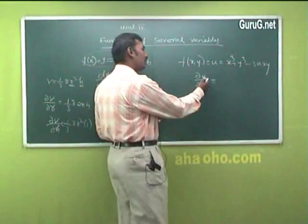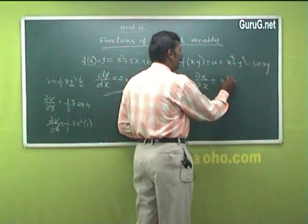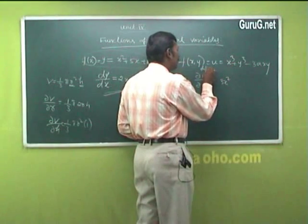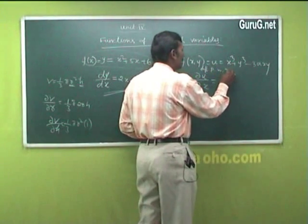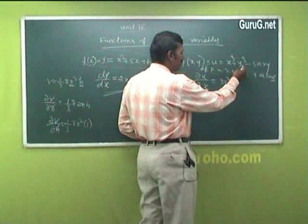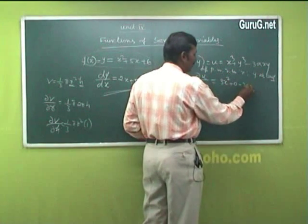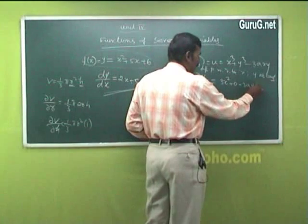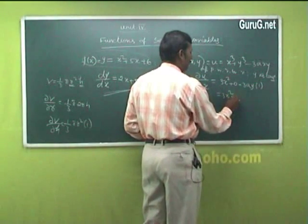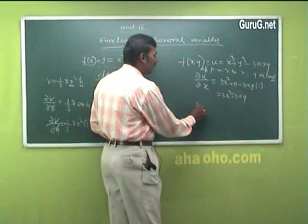So whenever the function has more than one independent variable, we go for a partial derivative. For ∂u/∂x, with u = x³ + y³ + r - 3axy: differentiate partially with respect to x keeping y as constant. So x³ gives 3x², the y³ term is constant giving 0, and for -3axy: 3a is constant, y is constant, differentiate x to get 1. So ∂u/∂x = 3x² - 3ay. Similarly we compute ∂u/∂y.